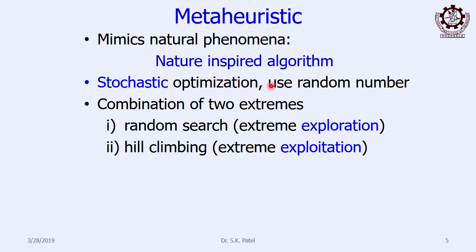Since meta-heuristics is stochastic, you have to use random numbers — invariably we need the help of random numbers. You must know how to generate random numbers in a computer program if you have to use meta-heuristics. All meta-heuristics are based upon two extremes: one is exploration and another is exploitation. Exploration means searching the entire search space to explore various potential solutions, and once a promising region is found, it exploits that particular region and reaches the global solution.